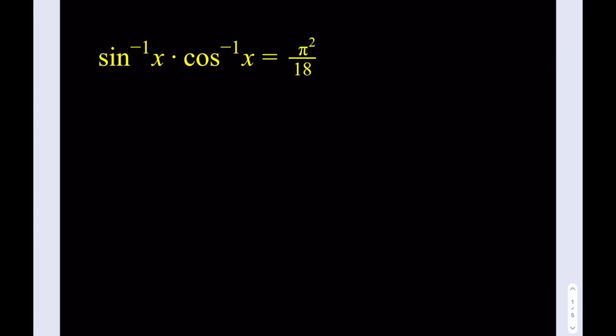So at this point, if you want, pause the video and try this problem first. Alright, so we have sine inverse of x multiplied by cosine inverse of x being equal to pi squared over 18, and we're supposed to solve for x.